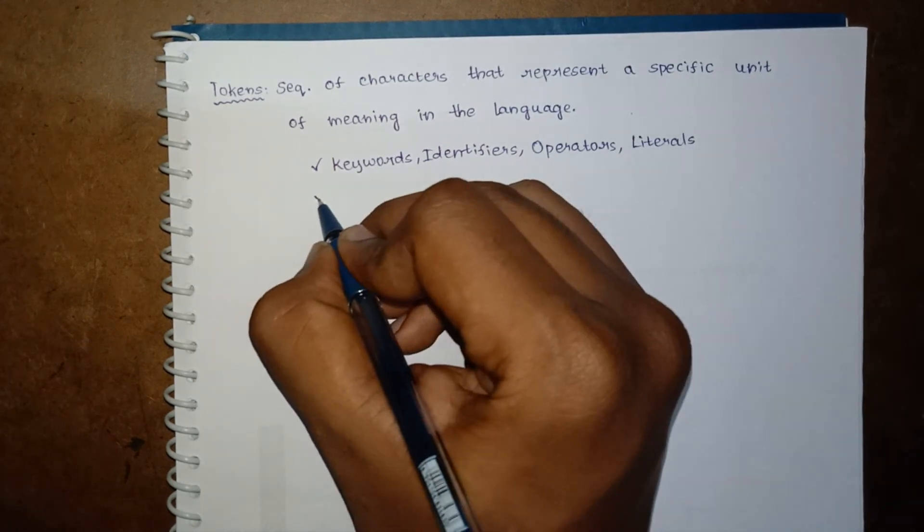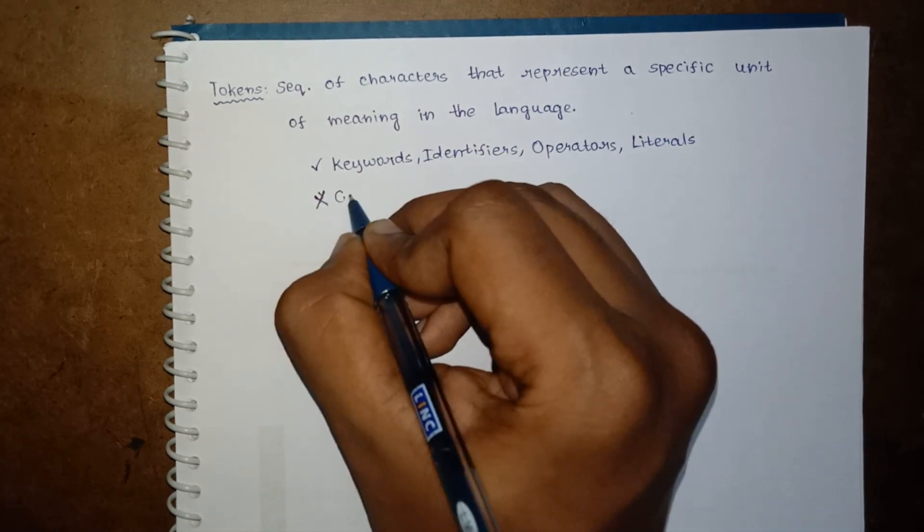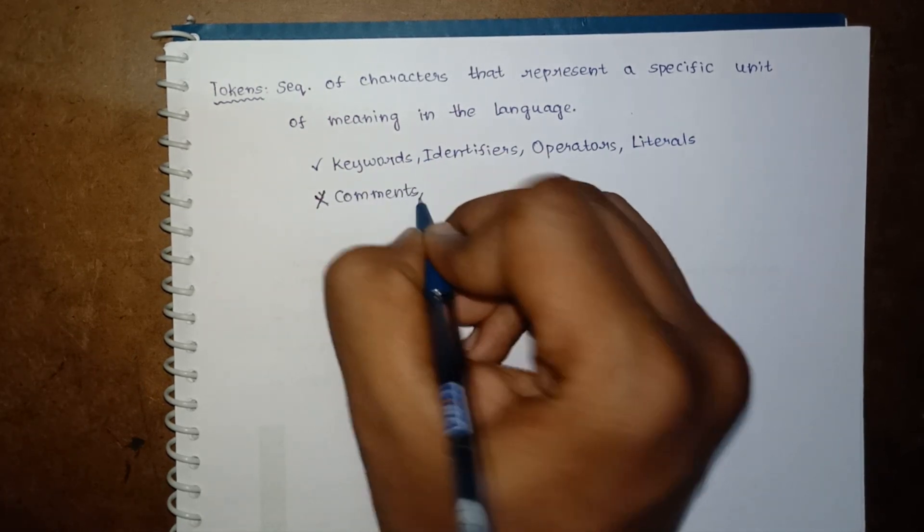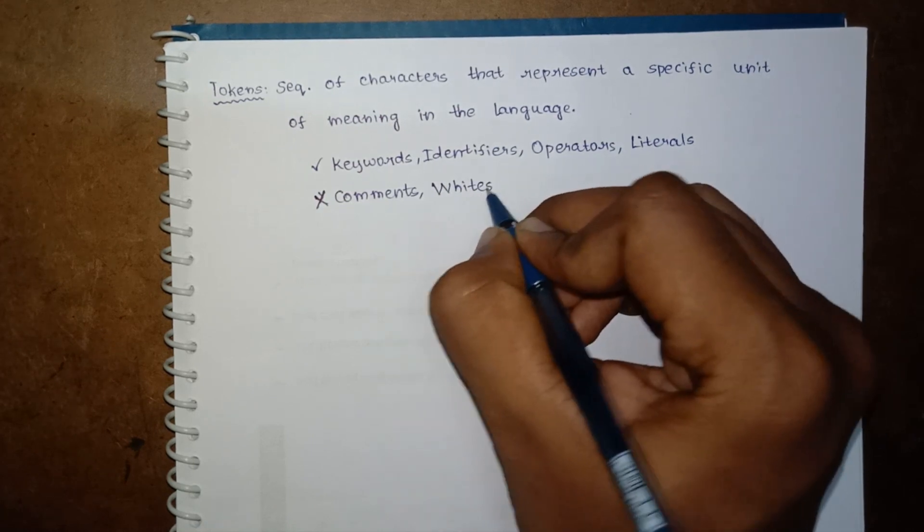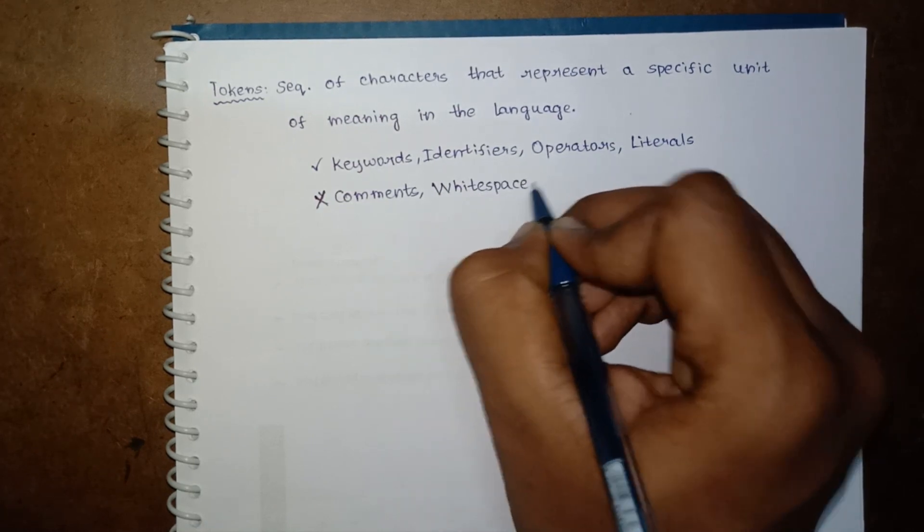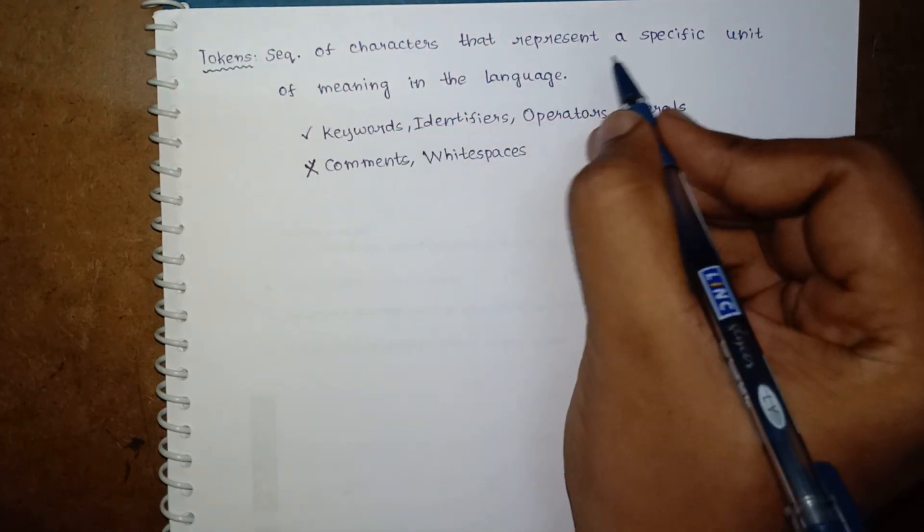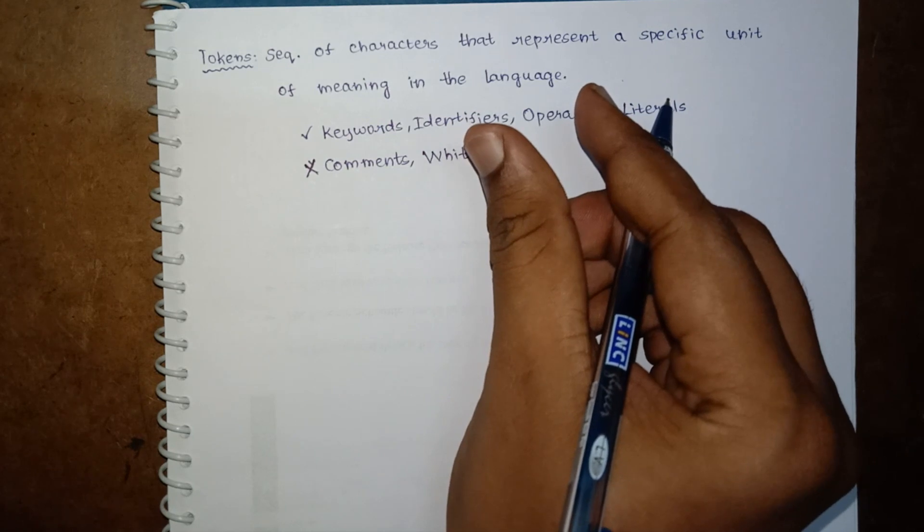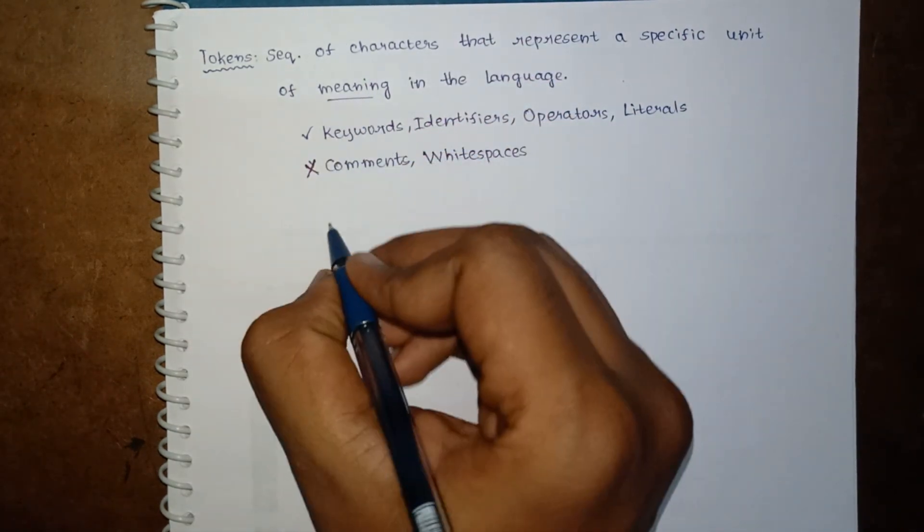While the tokens cannot be comments and white spaces. White spaces can include tab, space, and new line as well. To understand it, it is simply some unit in the source program that consists of a meaning. For example,